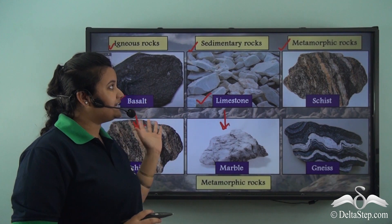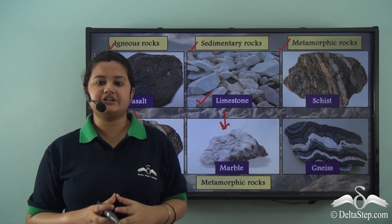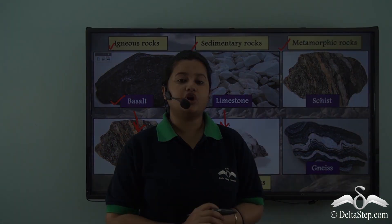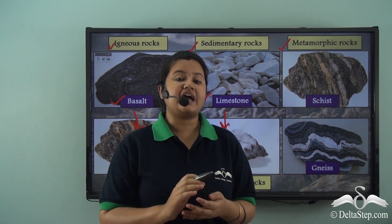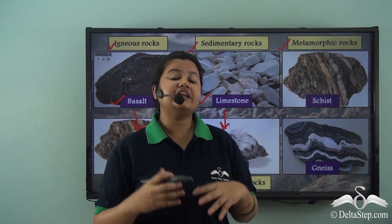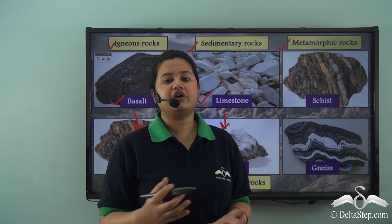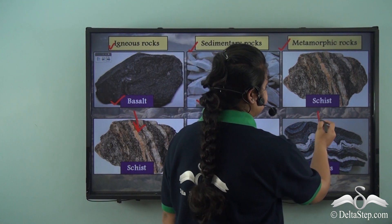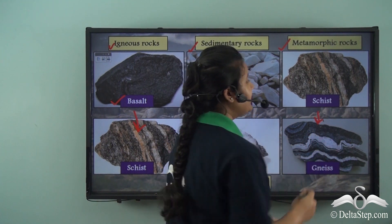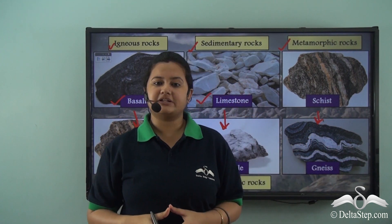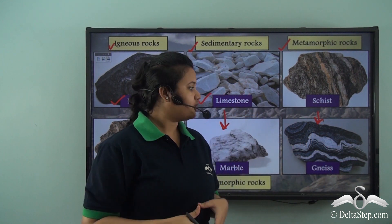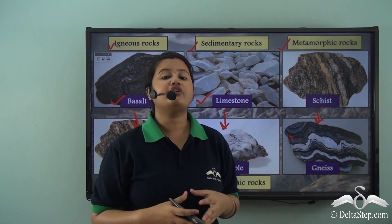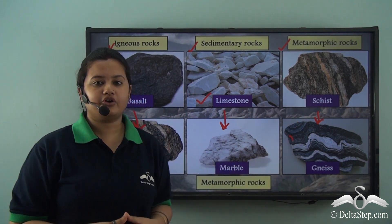Not just igneous and sedimentary rocks, but metamorphic rocks themselves get transformed and form new metamorphic rocks. For example, schist, a type of metamorphic rock, forms gneiss, which is another type of metamorphic rock.